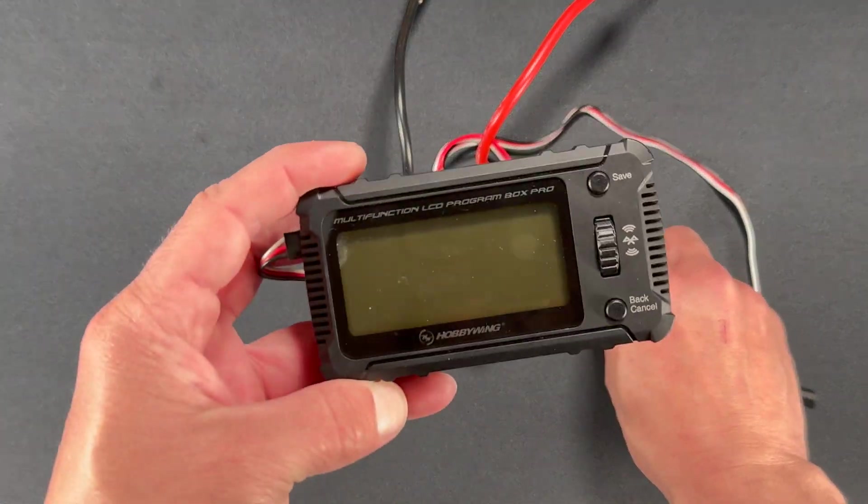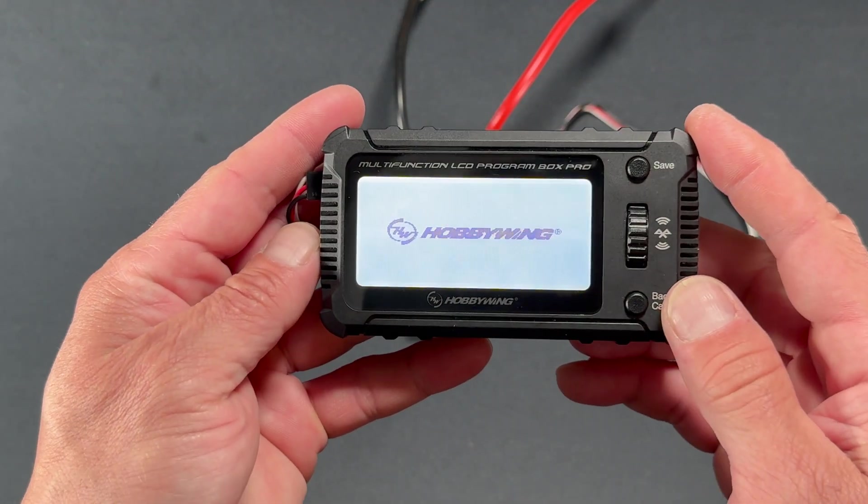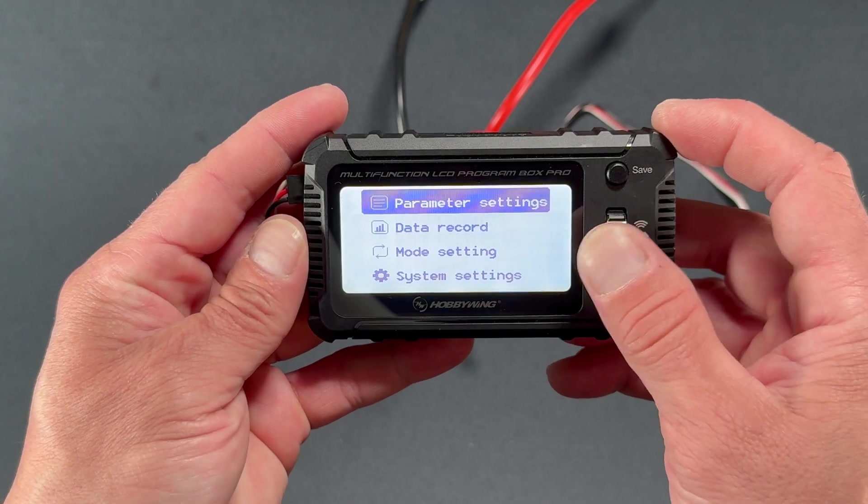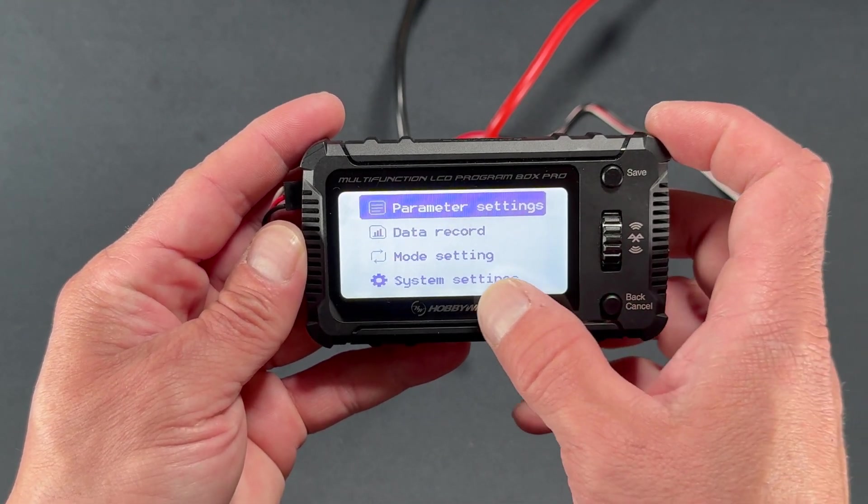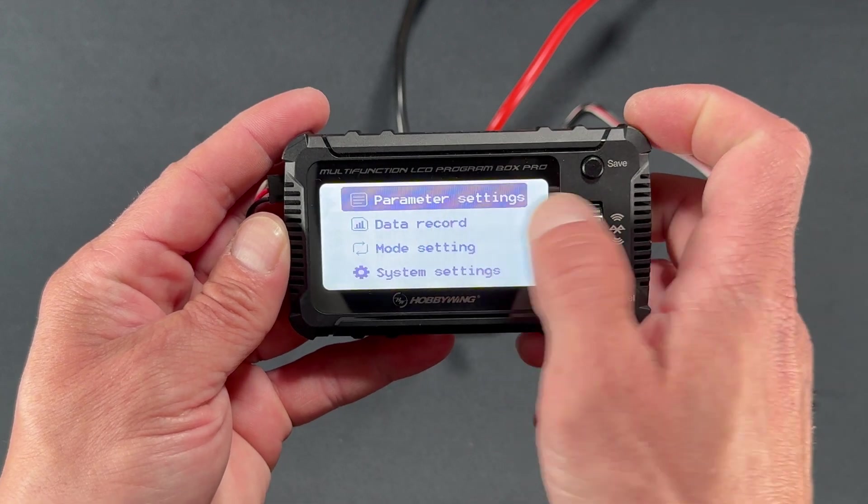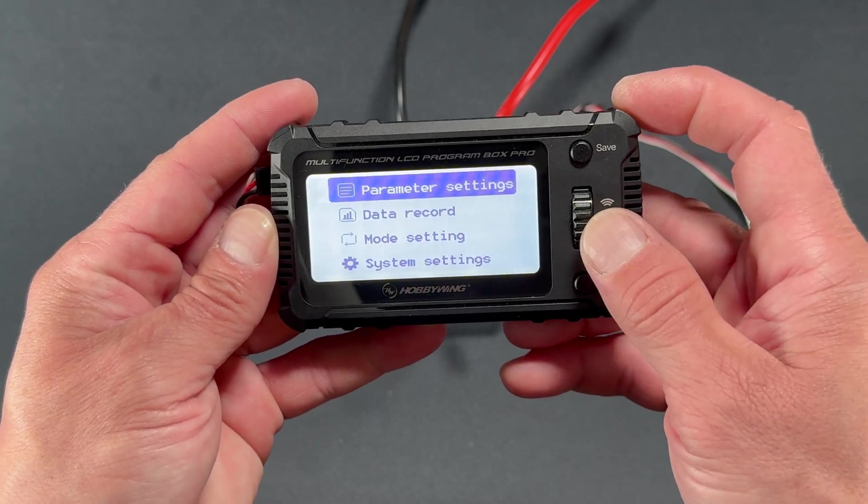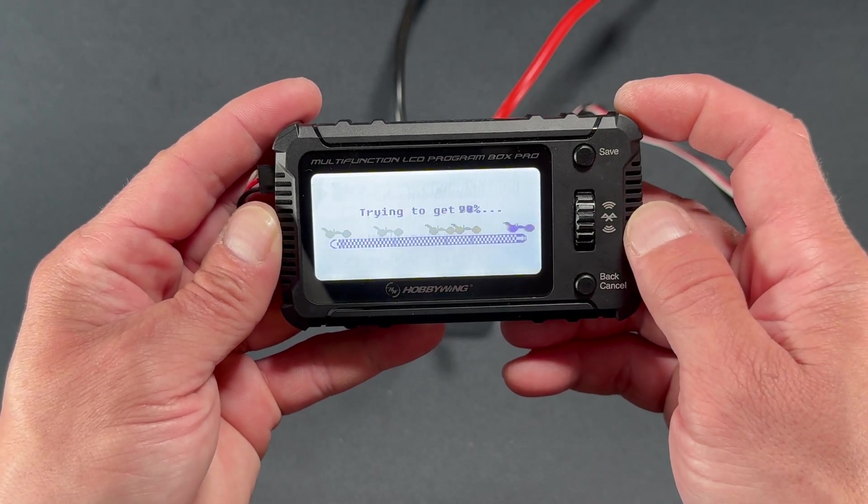So battery pack's plugged in, powered on. Little screen comes on. And then there's not going to be any data, there's not going to be any mode settings. The system settings are for the device itself. So you'll go into parameter settings. You hit down on the scroll wheel, and you'll get right into the settings.